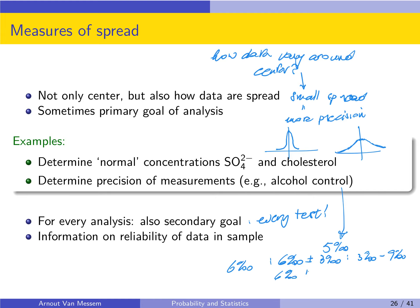If on the other hand you have 6 promil plus or minus 0.1 promil, then your test goes from 5.9 promil to 6.1 promil, and in this case you are always sure that the level of alcohol is too high. It is always above 5 promil, and so you are certain that the driver has drunk too much.